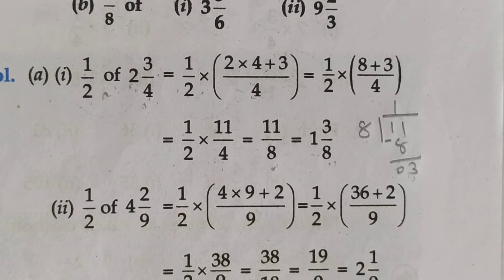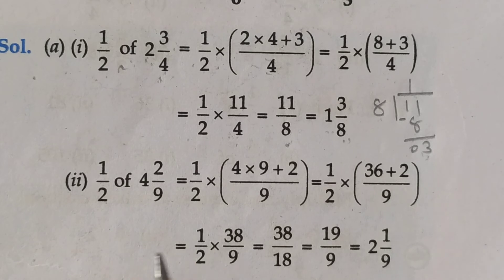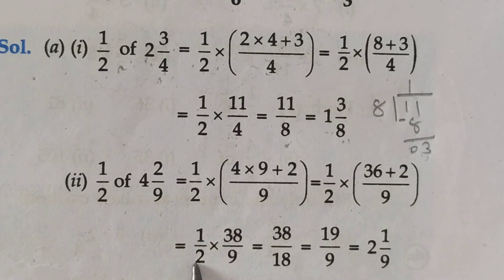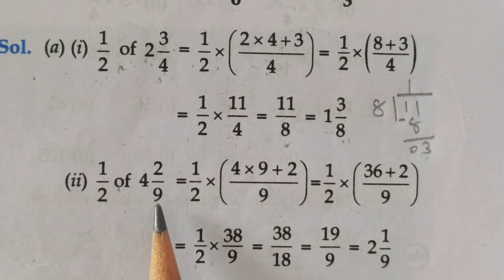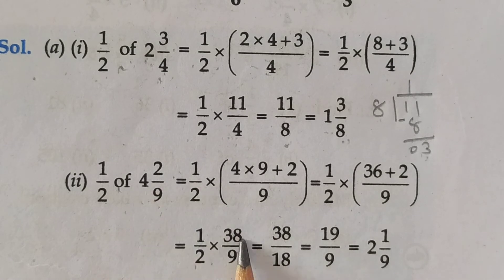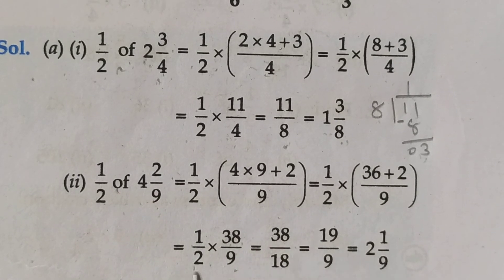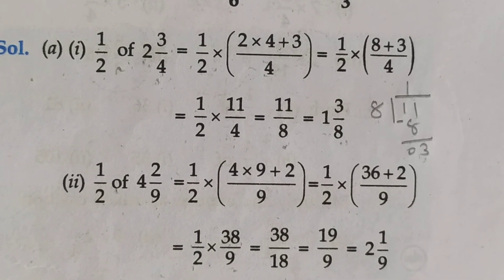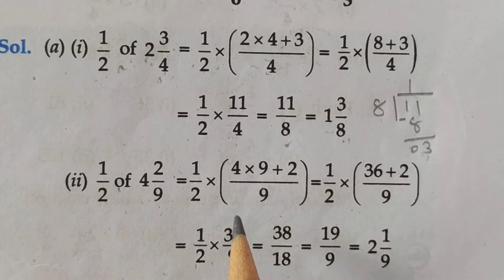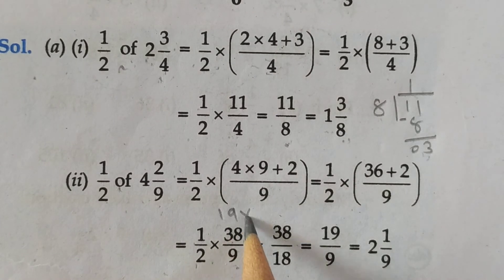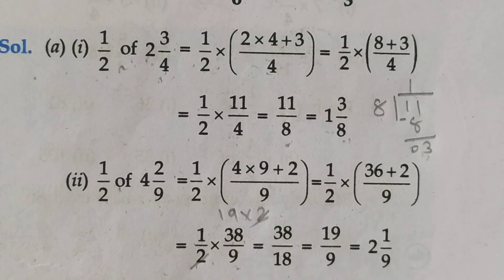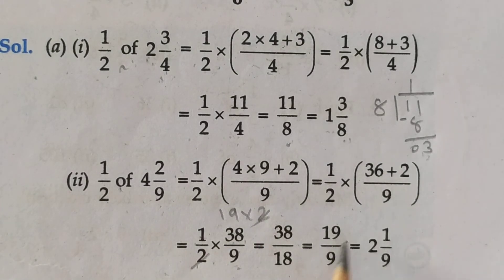Now students, look at the second: half of 4 whole 2 upon 9. So 1 upon 2 as it is — 'of' means multiply. Convert to improper fraction: 4 nines are 36, 36 plus 2 is 38 upon 9. Now 38 ones are 38 and 9 twos are 18. Take factors: 19 twos are 38, so cancel the 2s. Now 19 ones are 19 and 9 is left. So 19 divided by 9.